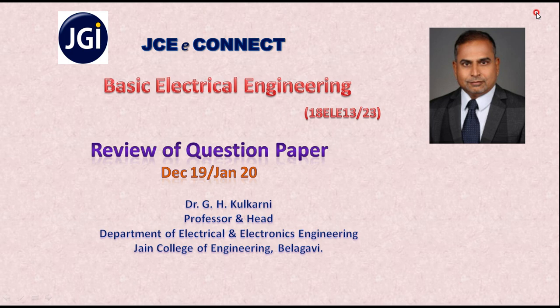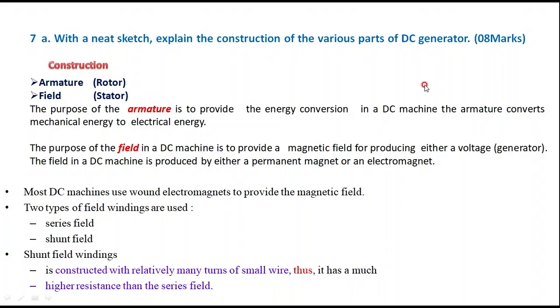Today we will take up question number 7 of module number 4, reviewing the question paper of December 2019, January 2020. The first question asks, with a neat sketch, explain the construction of the various parts of the DC generator for 8 marks. You have to draw the neat sketch as well as explain each part of the DC machine.